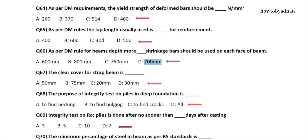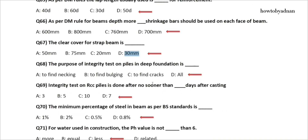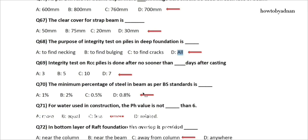Question 67: The clear cover for strap beam is? The answer is option D: 30 millimeters. Question 68: The purpose of an integrity test on piles in deep foundation is? The answer is option D: All. Question 69: Integrity test on RCC piles is done after no sooner than how many days after casting? The answer is option D: 7.